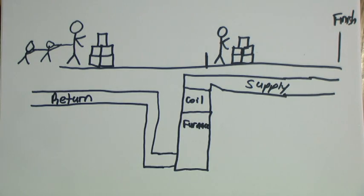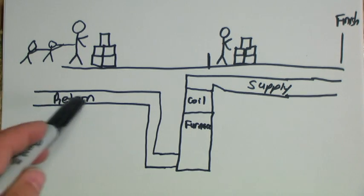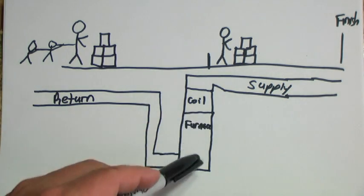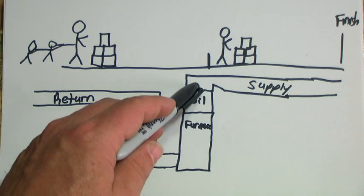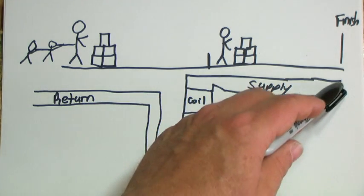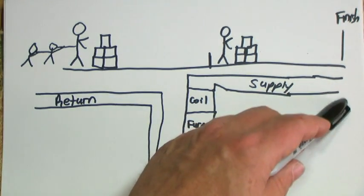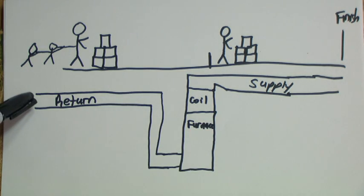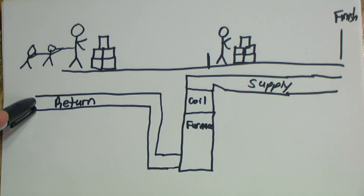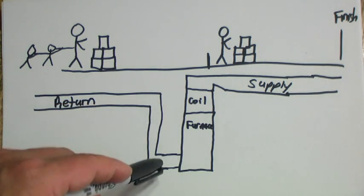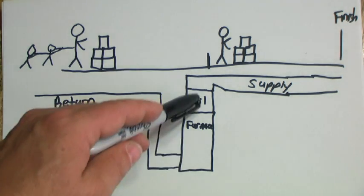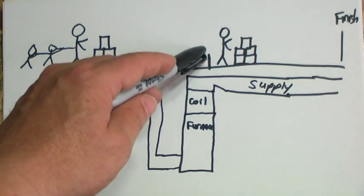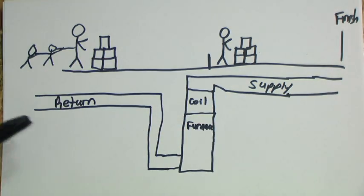So let's compare this to our furnace system. This is my return, midway point is my furnace and my coil and my supply, and ultimately would be my registers out here at the finish line. So the starting point would be my return air grills. And you've got your duct work. That's the road. And you've got your furnace and coil. That's where you transfer it over to the supply. It finishes it.